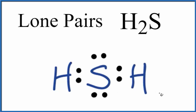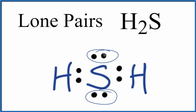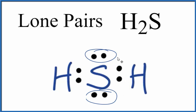So we have our Lewis structure. The lone pairs are the ones that aren't between atoms — they're not involved in chemical bonds. We call them unbonded pairs of electrons as well — right here and here. These are the two lone pairs of electrons on H2S. These electrons right here, between atoms, are shared in what's called a covalent bond, so these are bonding pairs of electrons. But these are the lone pairs for H2S.